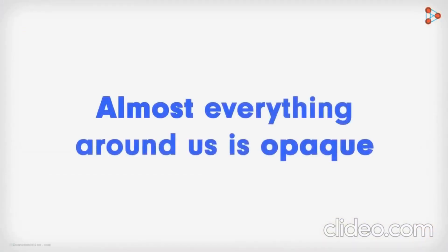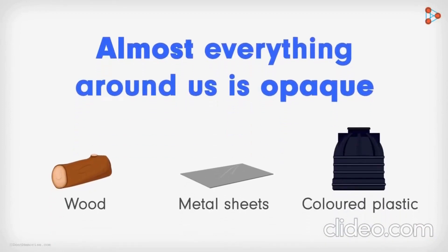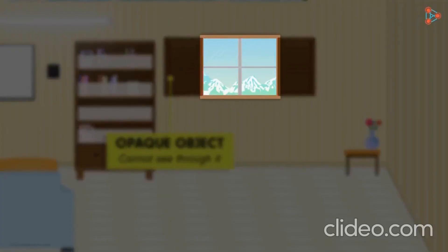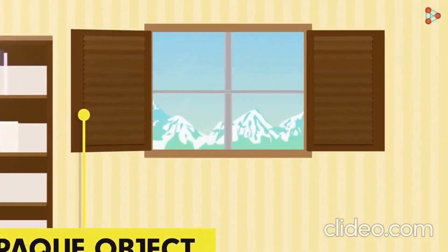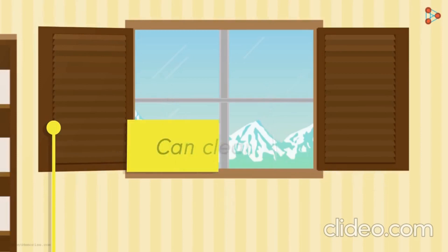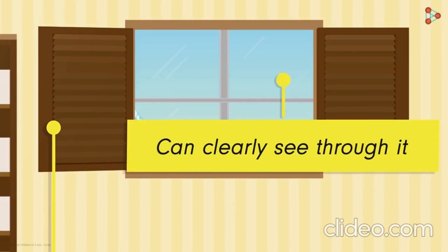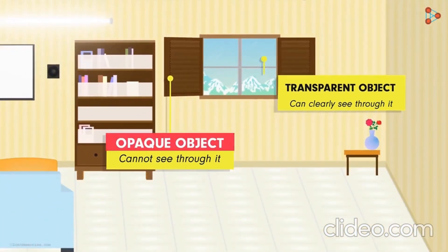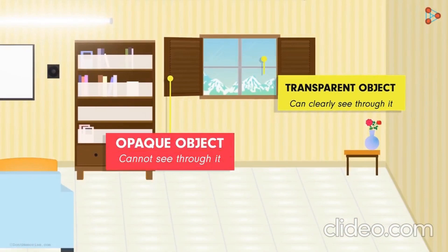Almost everything around us is opaque if you think about it — wood, metal, sheets, coloured plastic and so on. Now let's open the wooden shutters. Can you see something new? Yes. We see the surroundings through the glass. What has happened now is that we have a clear glass which allows light to pass through it, allowing us to see through it clearly. Such objects are called transparent objects. Earlier, the wooden shutter was opaque and opaque objects do not allow light to pass through them.